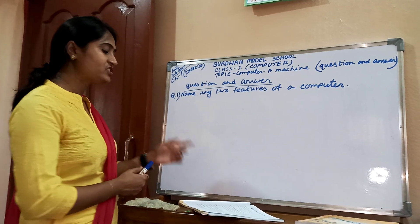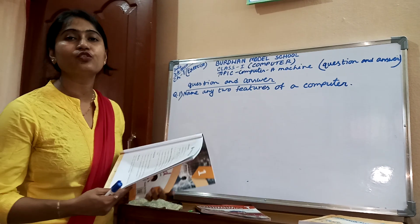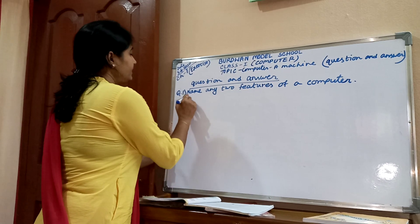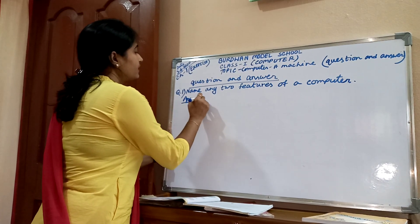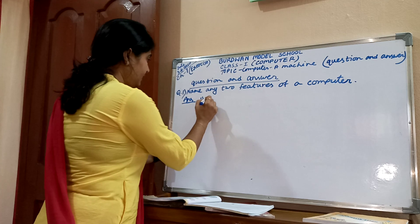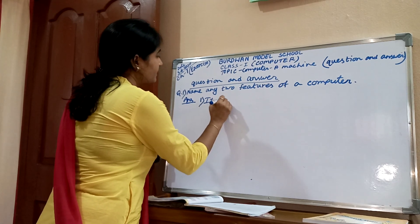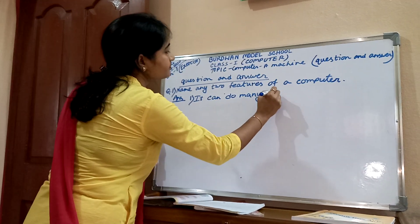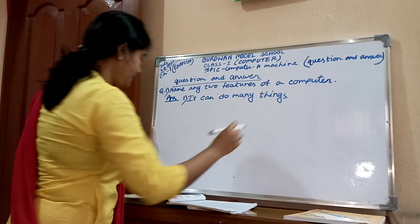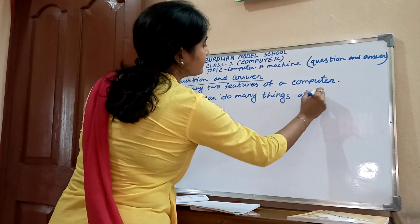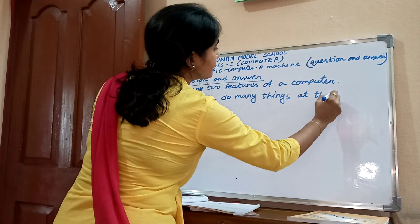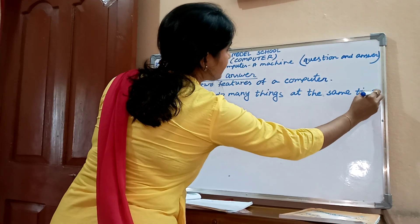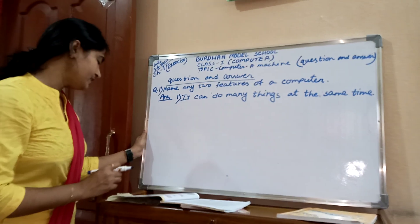Name any two features of a computer. Write down the answer. Any two features. Number 1: it can do many things at the same time. Computer can do many things at the same time.